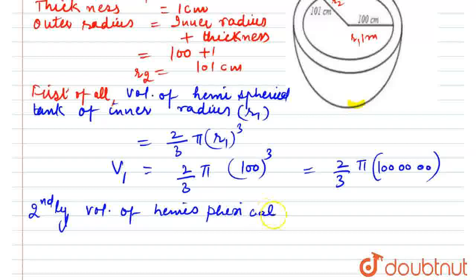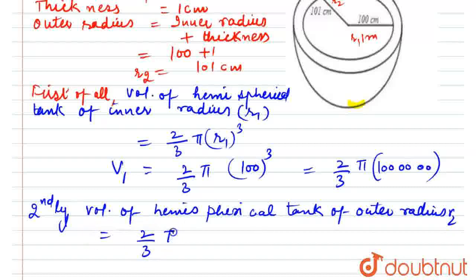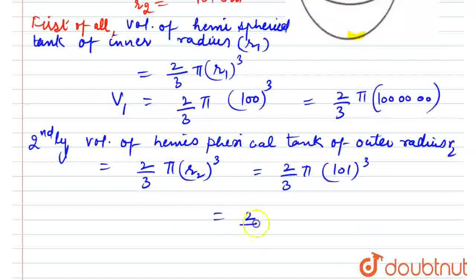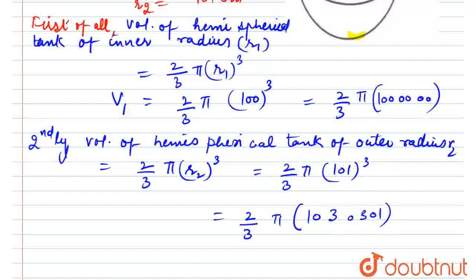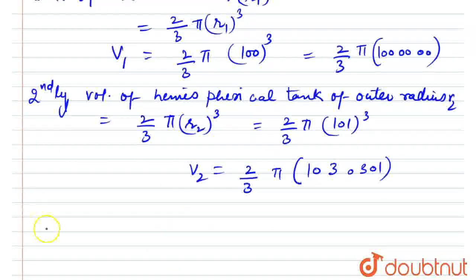Now we find the volume of the hemispherical tank of outer radius r2. V2 = (2/3)πr2³. Substituting r2 = 101 cm: V2 = (2/3)π(101)³ = (2/3)π(1030301).